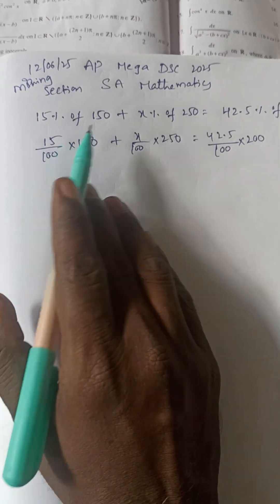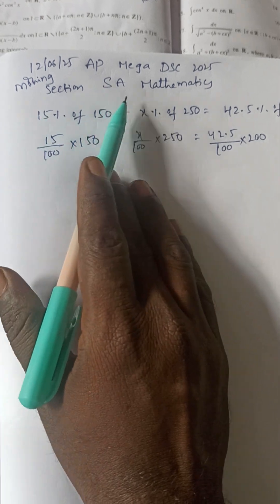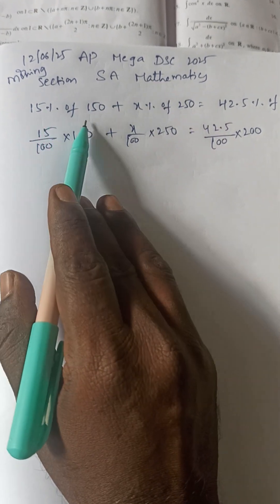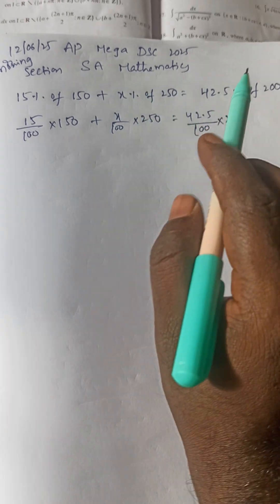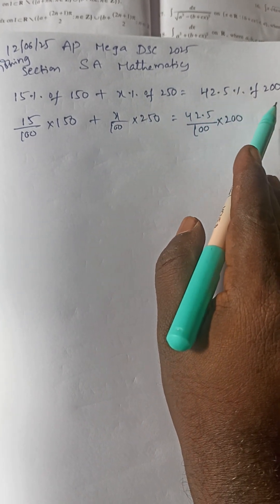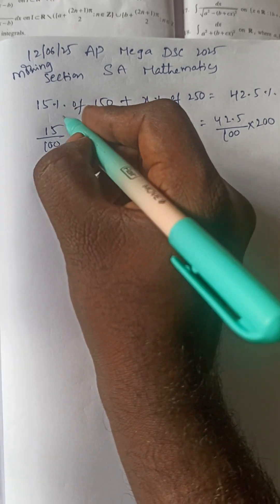Hi, welcome back to our YouTube channel Eros JP. Today's topic is AP Mega DSC 2015, Section S-A Mathematics. Question 15: 15 percentage of 150 plus x percentage of 250 is equal to 42.5 percentage of 200. So, 15 by 100 into 150.